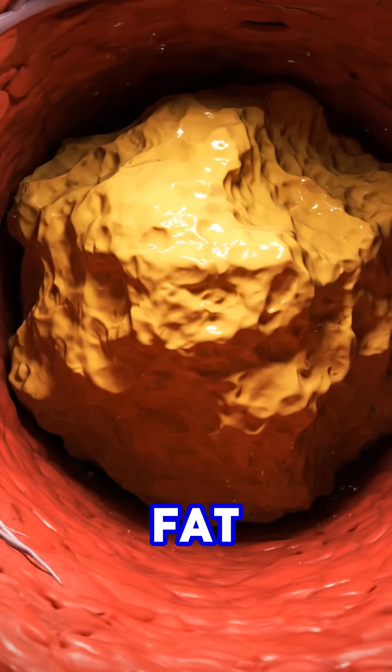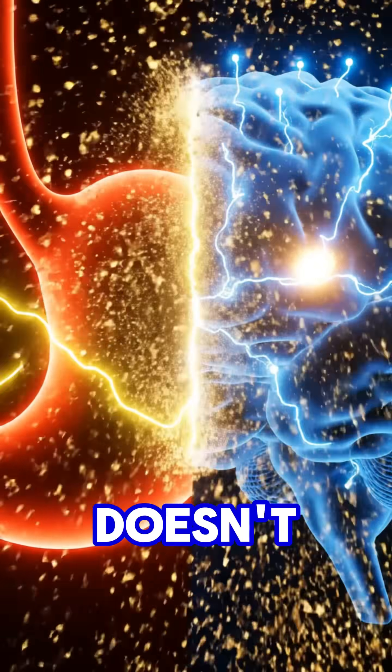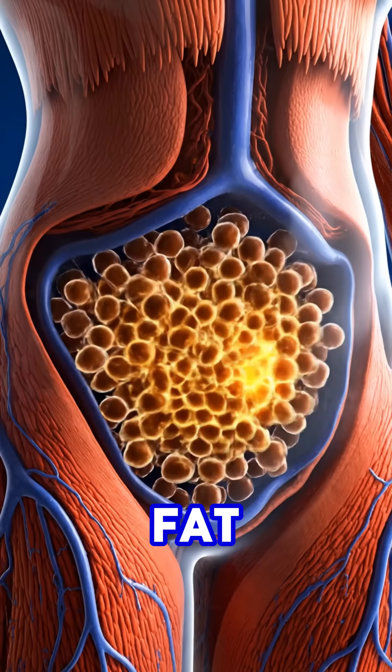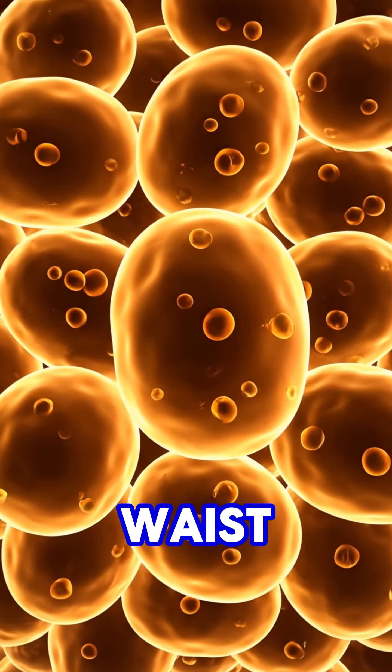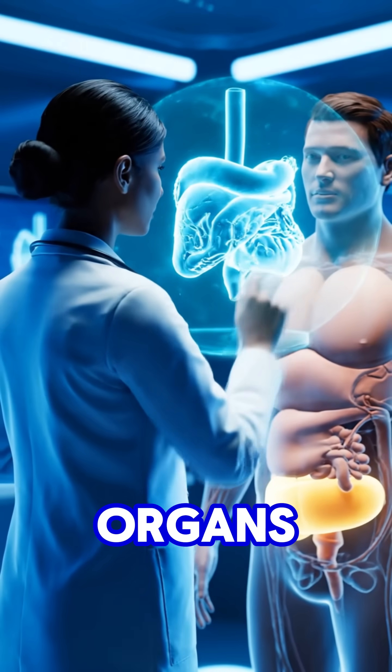Your stomach tries to say 'I'm full,' but the brain doesn't listen anymore. Your fat cells multiply fast, wrapping around your waist like a growing belt. Doctors can see it clearly—your organs are being squeezed by fat buildup.